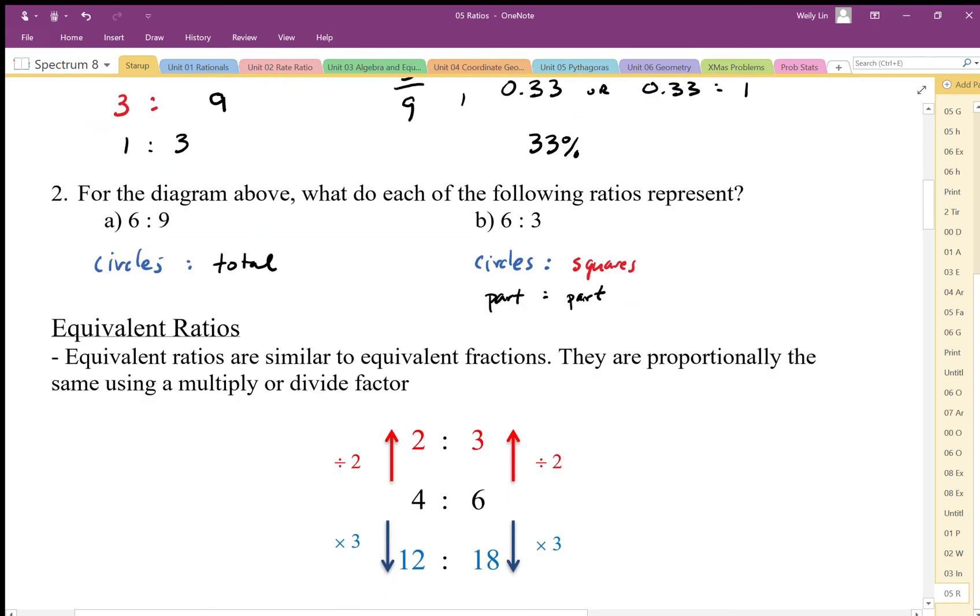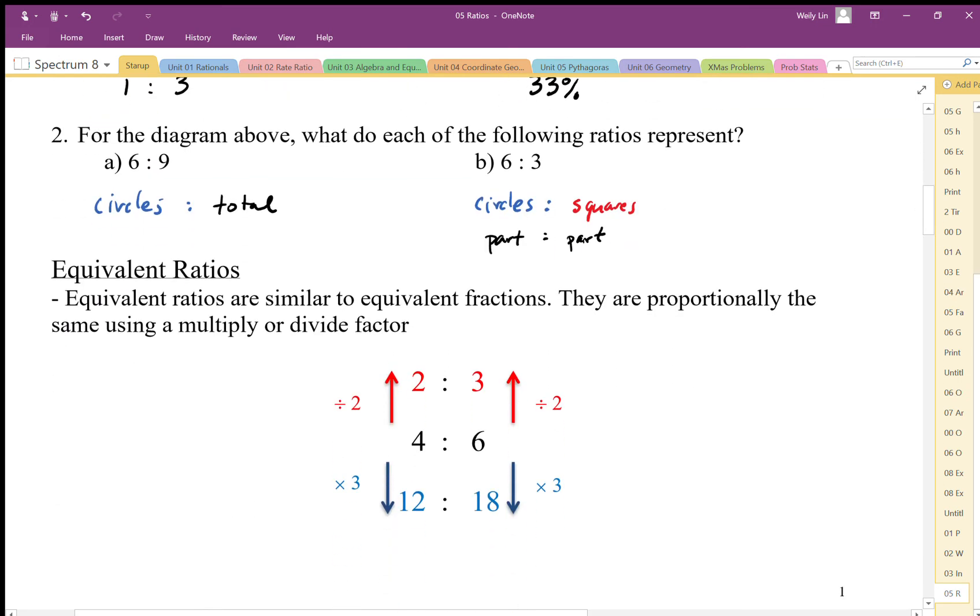Equivalent ratios are like equivalent fractions - they are connected with the times and divide. If we start with our initial ratio of 4 to 6, that can be scaled down by dividing both parts of that ratio by 2, or it can be scaled up by multiplying both parts of that ratio. In this case I've shown multiplying by 3.